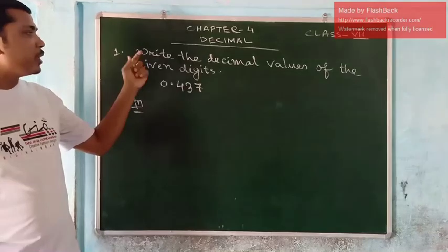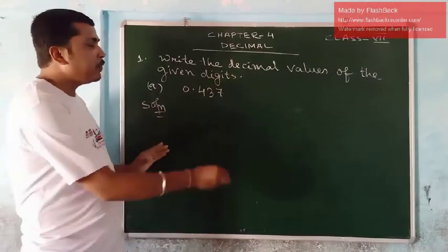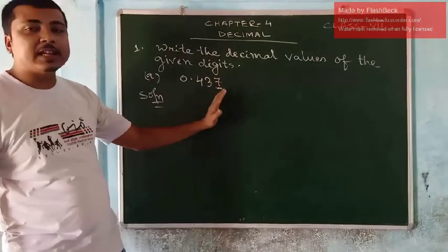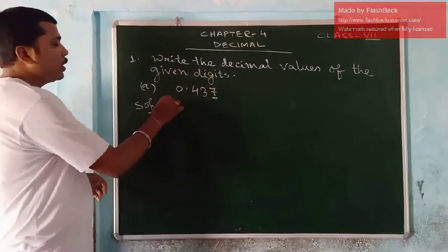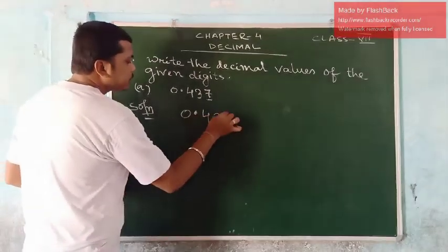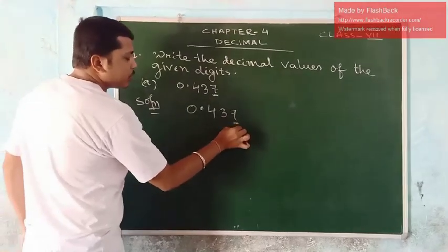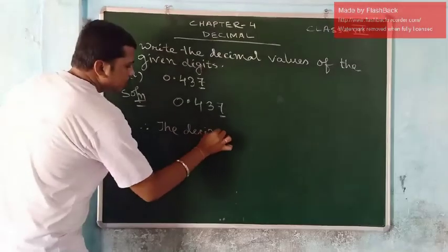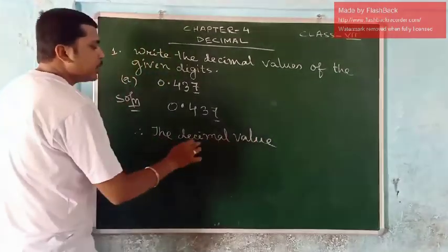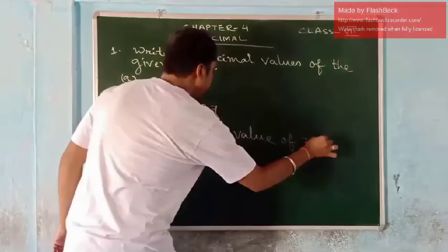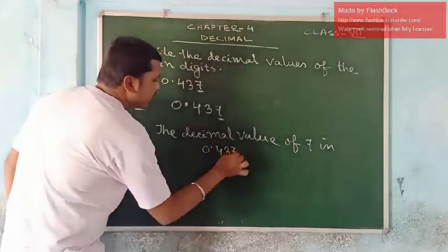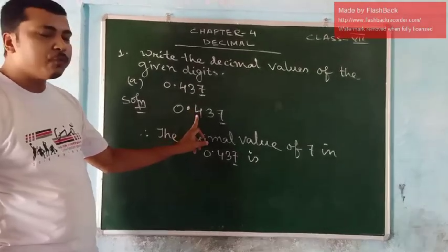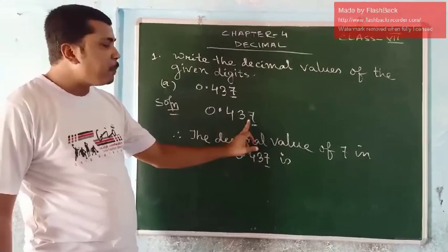Here in the recap exercise, we have our first question: write the decimal values of the given digits. You have to write the decimal values of the given digits. In your question, 7 is written in bold — that means you have to find the decimal place value of 7. You have to find the decimal value of 7 in 0.437. After decimal, 4 is in the first place, so the place value of 4 is tenths. Place value of 3 is hundredths. And the place value of 7 will be thousandths.